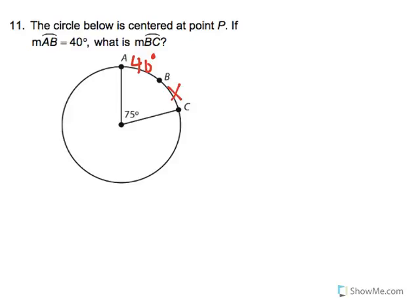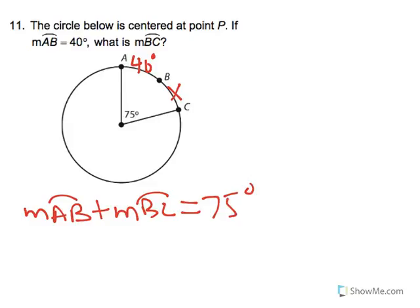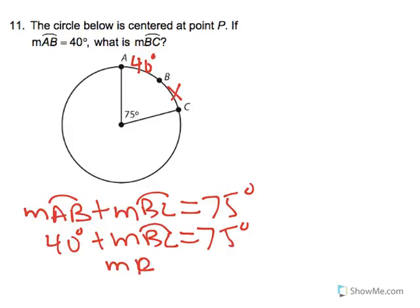We know that the measurement of arc AB plus the measurement of arc BC is equal to 75 degrees. So the measurement of arc BC is equal to 35 degrees.